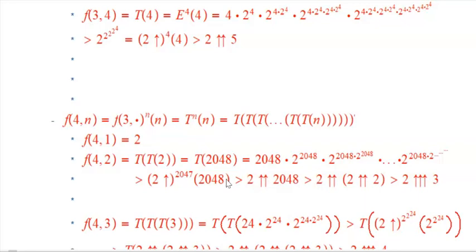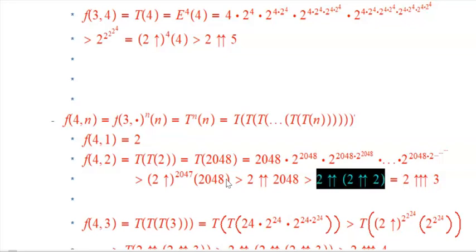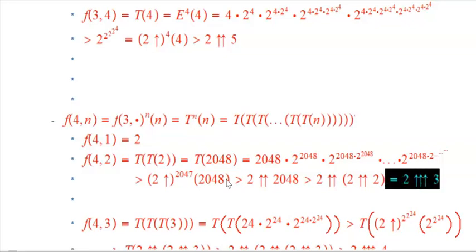And that's quite, quite, quite a bit bigger than 2 double-up of 2 double-up 2. It turns out that's actually the definition of a triple up-arrow. So if you want to look at my other ridiculously large number videos, toward the start I talk a lot about double ups and triple ups. A triple up-arrow is simply repeating the double up-arrow a certain number of times.